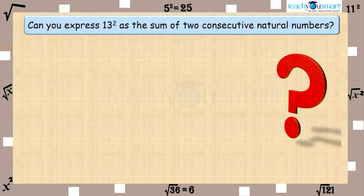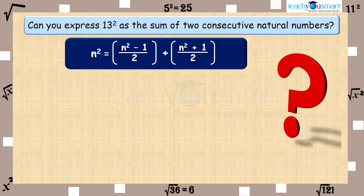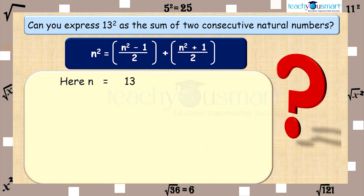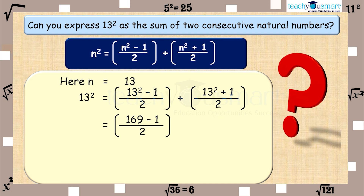Now, can you express 13 square as the sum of two consecutive natural numbers? Let's try. We have the form: n square equals (n square minus 1) divided by 2, plus (n square plus 1) divided by 2, where n equals 13. That is, 13 square equals (169 minus 1) divided by 2, plus (169 plus 1) divided by 2, equals 84 plus 85 equals 169.